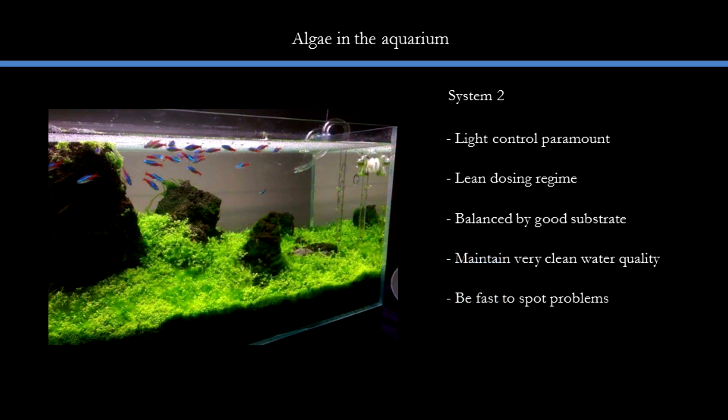The last point I want to talk about is that spotting problems early and solving them is critical, because there is less plant mass to fight off potential issues. If you're doing Iwagumi with just an HC carpet, that's all you're going to have. If you get mostly invaded by BGA and it reaches a critical mass, it is extremely difficult to remove without resetting the entire tank.